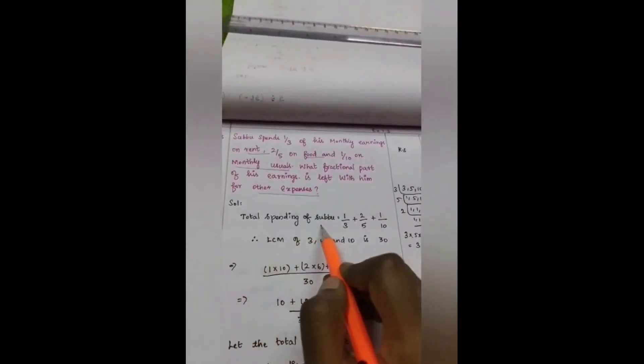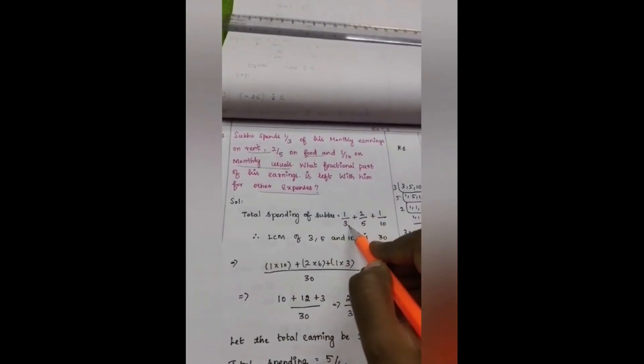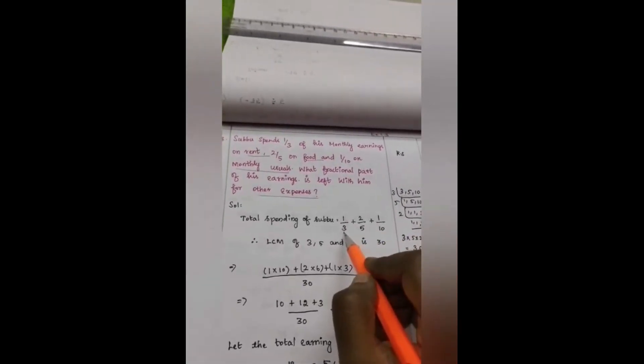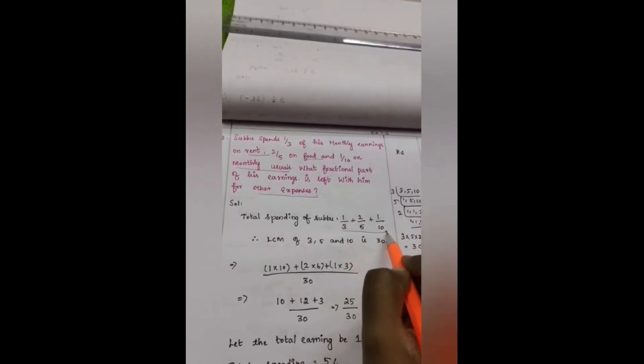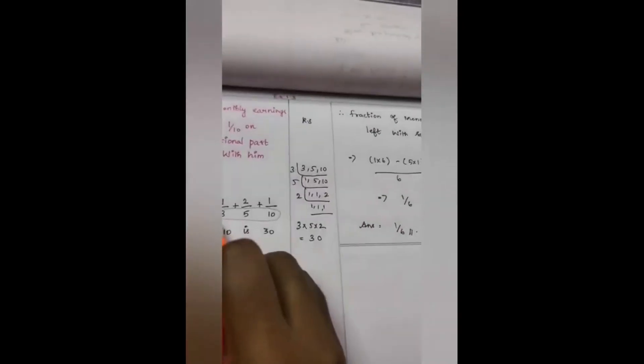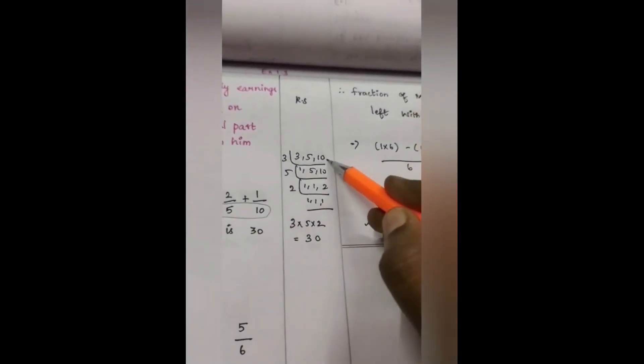Total spending of Subbu: 1 by 3 for rent, 2 by 5 for food and 1 by 10 for monthly usuals. See, after writing this, we have different denominators. In order to solve that, we need to take LCM. 3, 5, 10.